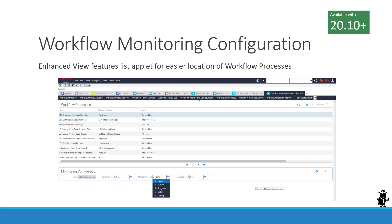Now in 20.10, Oracle delivers a new view called the Workflow Monitoring Configuration view. As seen in the screenshot taken after the update, it has a list applet on top, making it easier to locate one or more workflow processes. For each workflow process selected in the list, you can set the monitoring configuration. Be aware that the monitoring configuration is workspace-specific, so if you have a different workspace or version selected, you set the monitoring level for that workspace and version.